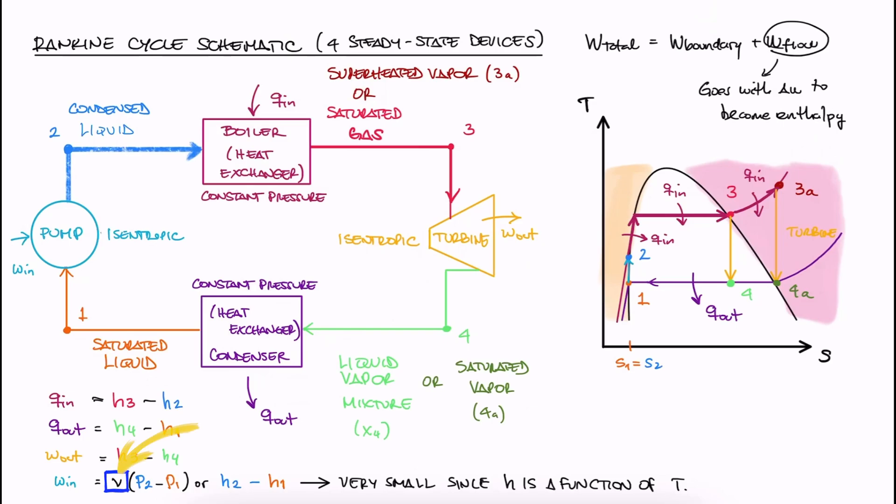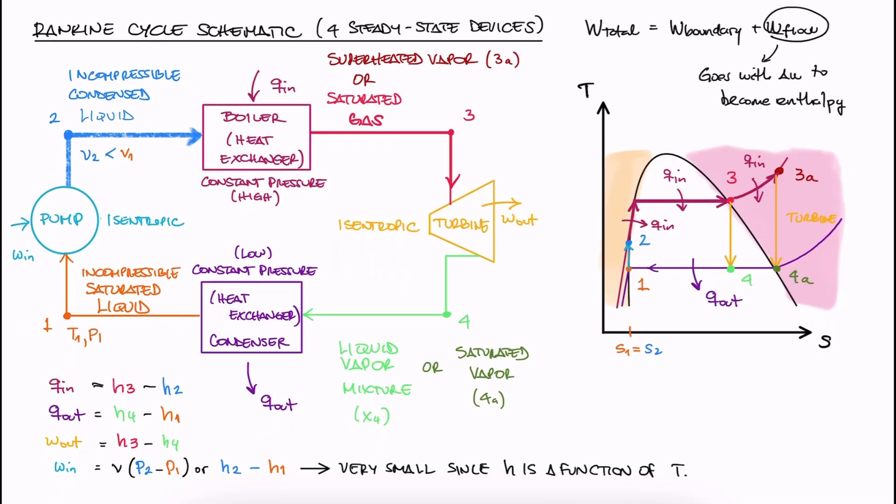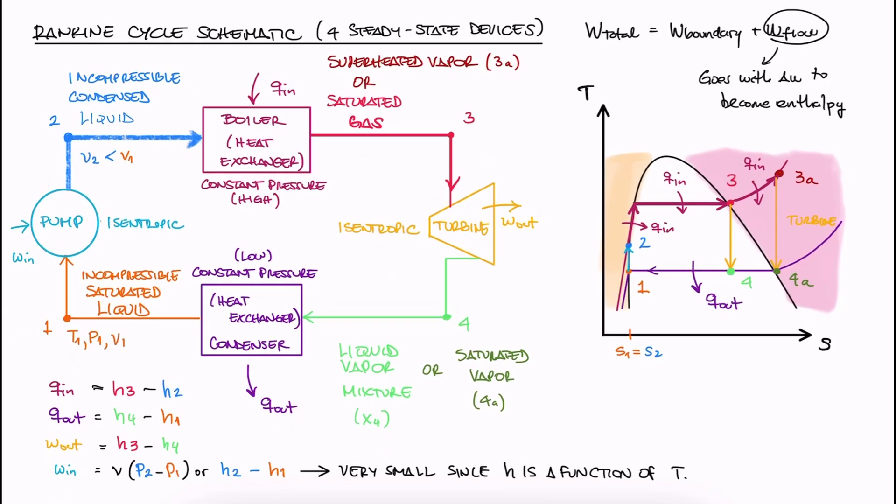Now, which V do we use, V1 or V2? It will be different, right? Because the higher pressure makes the specific volume decrease. We think of liquids as incompressible substances, but they can still be compressed. However, not enough for us to even try to calculate an average between V1 and V2. Since we usually have temperature or pressure information about 1, we can just find the specific volume for a saturated liquid as V1 and use it in this equation to calculate the work of the pump. And this is the first major difference with respect to gas power cycles.